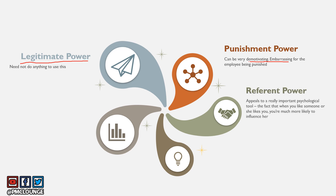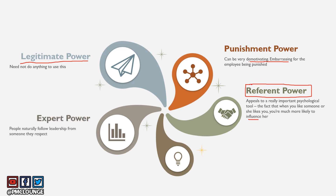Number three is referent power. When you like someone or someone likes you, it is much easier to influence them — that's the whole idea behind referent power. Should you use it? Of course, if you can influence people, go ahead. But this is not something usable at all times with all people. It's not a type of power you will necessarily have with every team member at all times.